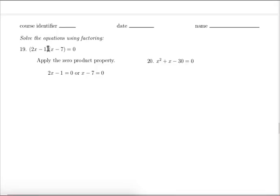Because we have a product of two things that is equal to zero, one of those things must be equal to zero. If neither of them are, then of course the product would not be zero. So 2x minus 1 is equal to zero or else x minus 7 is equal to zero.